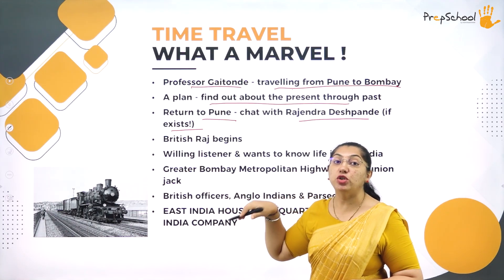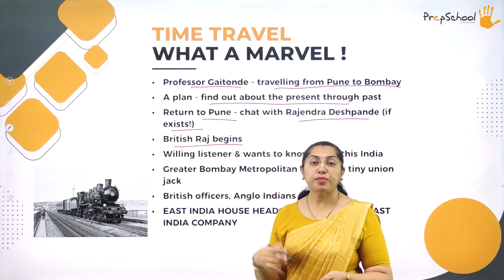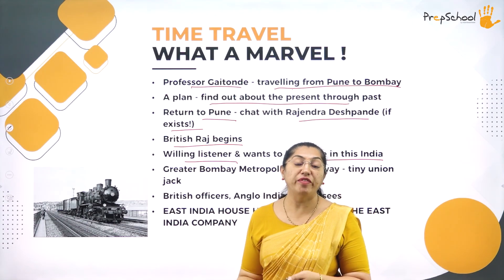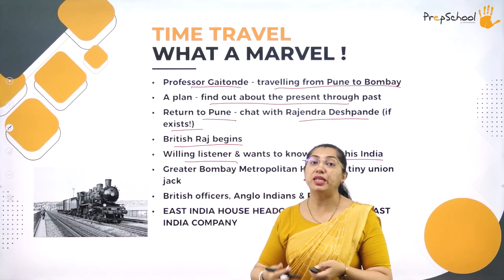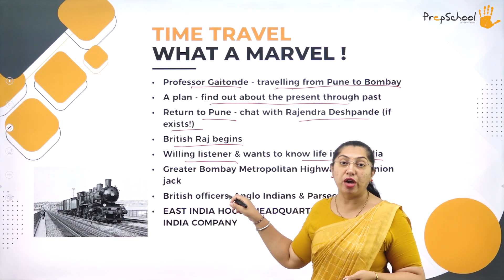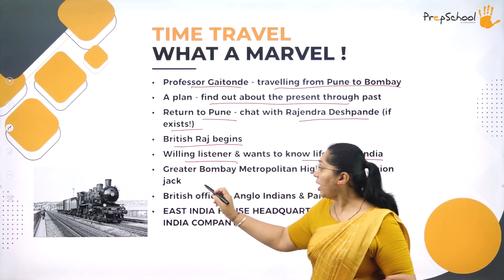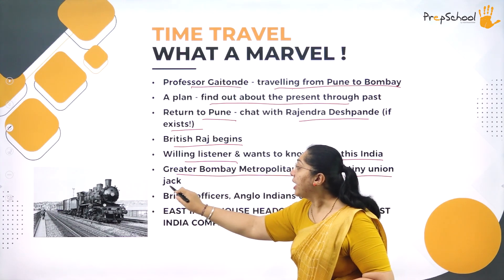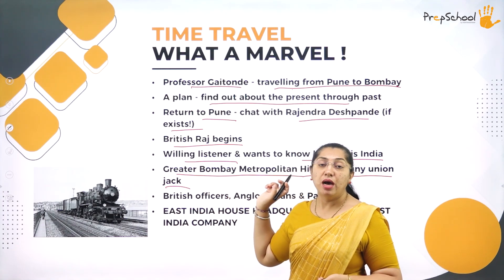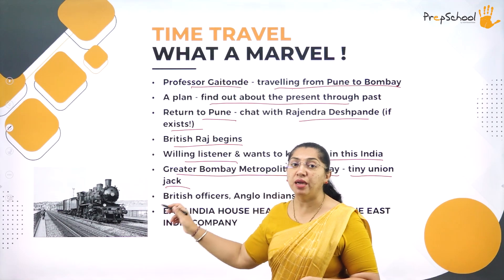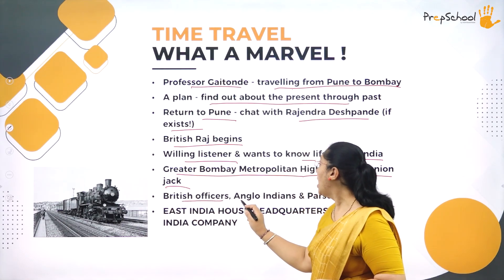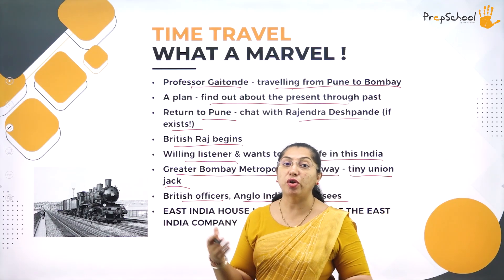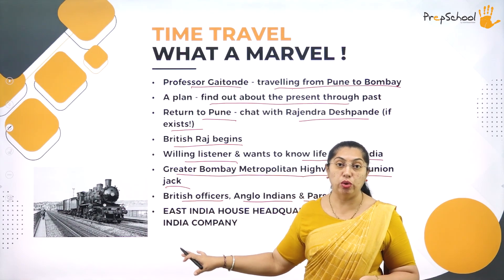As he was traveling, he could read 'British Raj Begins.' He was traveling in a train, and he could see many passengers speaking about the life of India. He had read about India in books but had no real experience. He also notices the Greater Bombay Metropolitan Highway, written in a Union Jack painting, and sees British officers, Anglo-Indians, and Parsis working in railway stations and buildings — all reflecting the era of British rule.